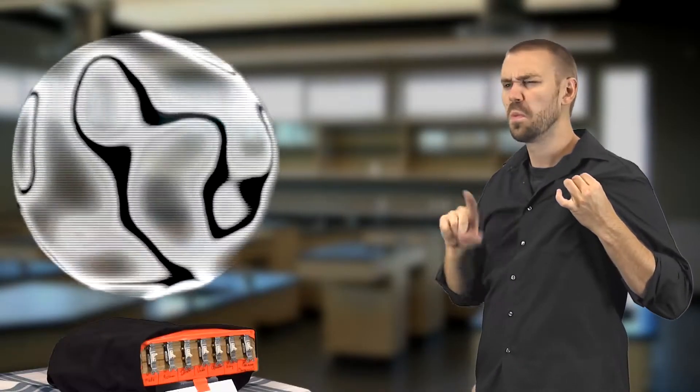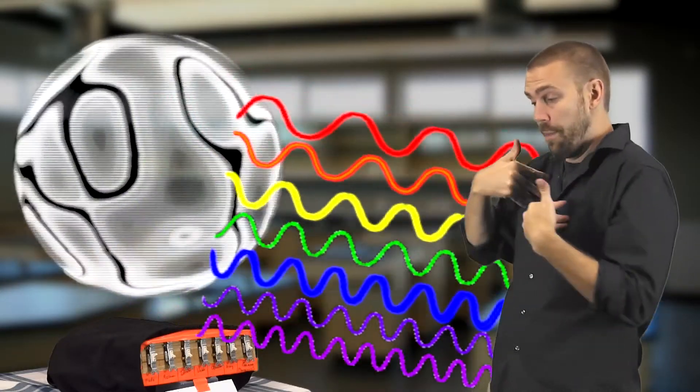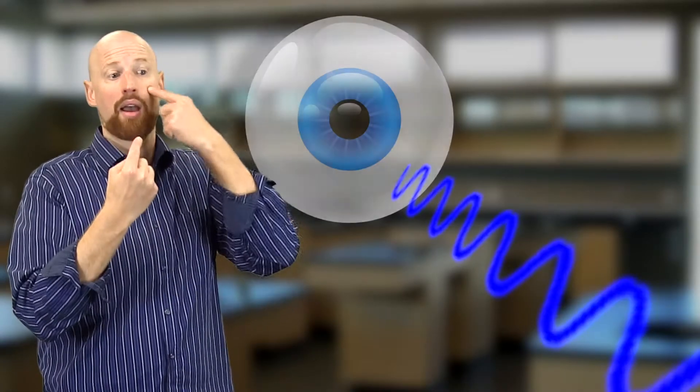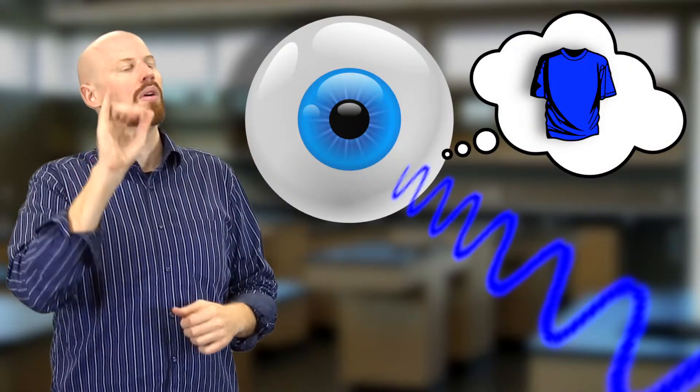Now, if I were to say my shirt is blue, what I'm really saying is that my shirt absorbs all the visible light spectrum frequencies except for blue. Oh, so when that frequency hits my eye, then I see the color blue.